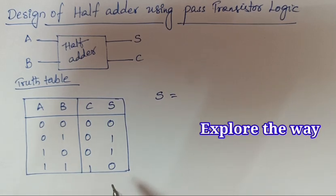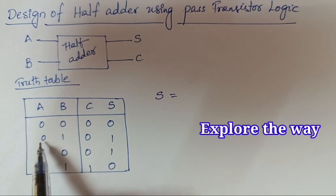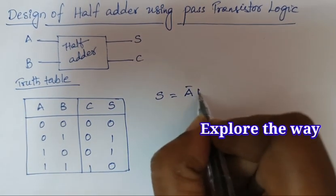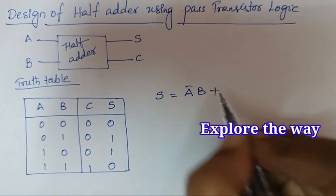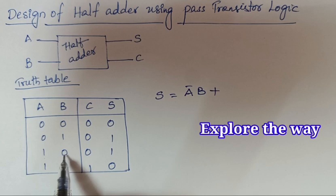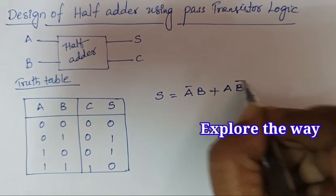From this truth table, the Boolean expression for sum output is: sum equals 1 when A equals 0 and B equals 1, so we can write it as A̅B plus, and it is 1 when A equals 1 and B equals 0, so we can write it as AB̅.